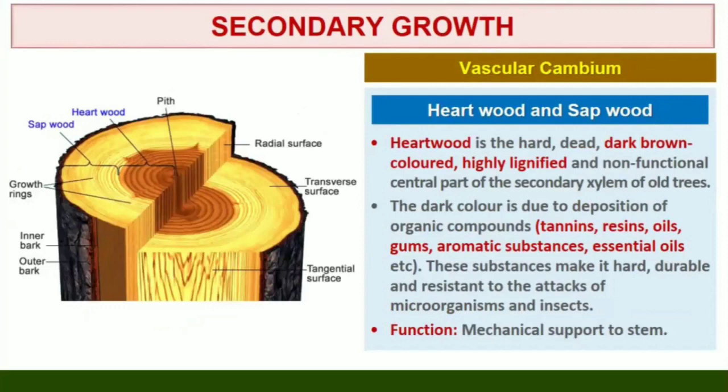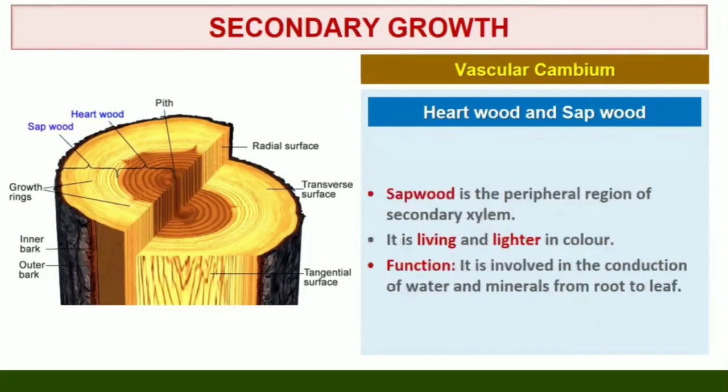Heartwood and sapwood: In old trees, the greater part of secondary xylem is dark brown due to deposition of organic compounds like tannins, resins, oils, gums, aromatic substances, and essential oils in the central or innermost layers of the stem. These substances make it hard, durable, and resistant to attacks of microorganisms and insects. This region comprises dead elements with highly lignified walls and is called heartwood. The heartwood does not conduct water but gives mechanical support to the stem. The peripheral region of secondary xylem is lighter in color and is known as sapwood. It is involved in the conduction of water and minerals from root to leaf.